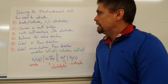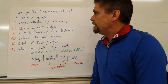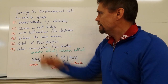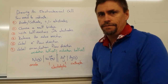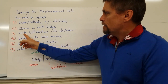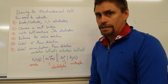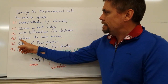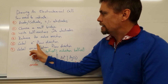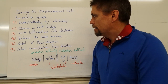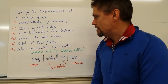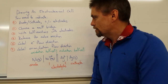Let's have a look at how to draw an electrochemical cell. To do this, we need to draw a few things. First of all, we need to indicate the anode and the cathode, and the positive and negative electrodes. We need to choose an appropriate salt bridge, write the appropriate half-reactions at the correct electrode, and balance those half-reactions into a full redox reaction. We also need to label the electron flow and the anions and cations flowing through the salt bridge.